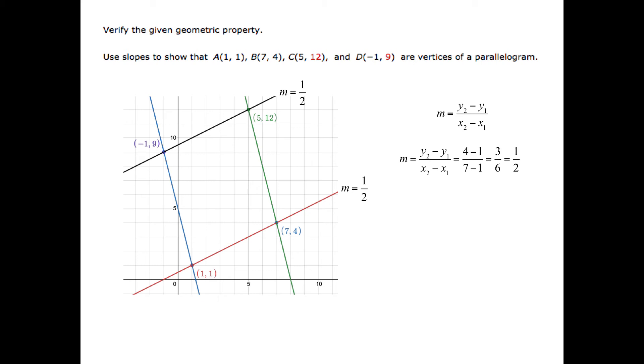Now let's find the slope of the line that passes through the points. Again, we'll use the slope formula and substitute and get 12 minus 4 divided by 5 minus 7. As we simplify, we find 8 divided by negative 2, which is negative 4.